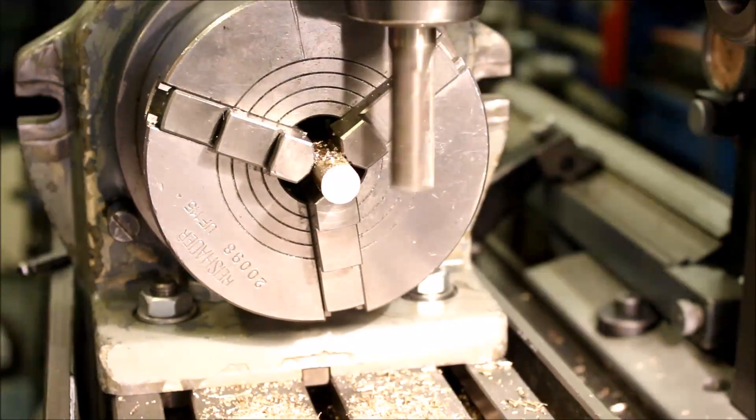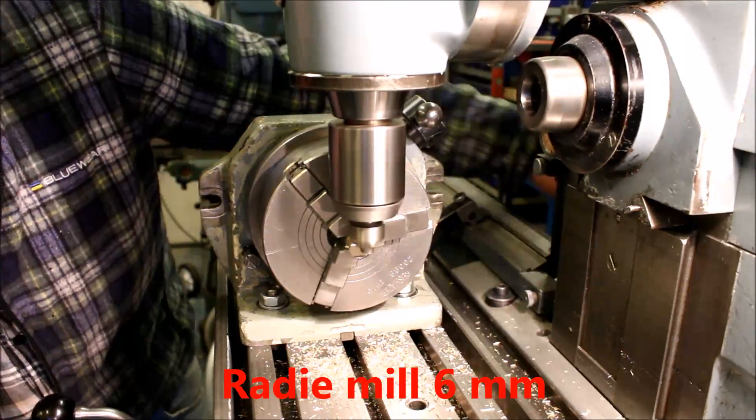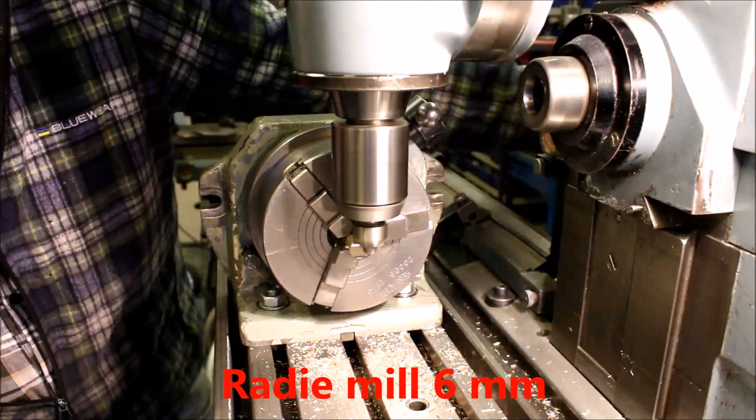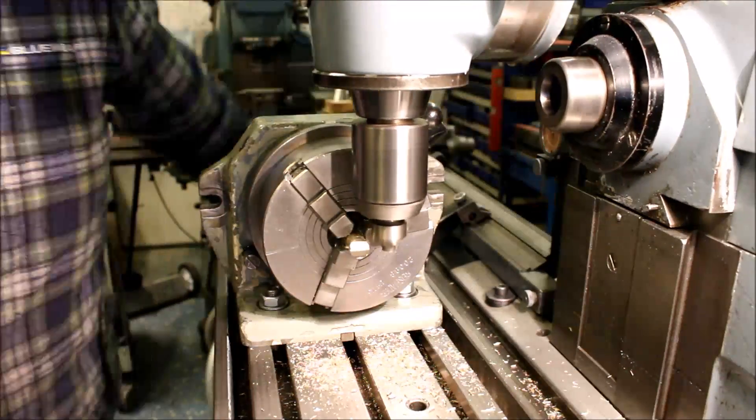Milling down the brass bar to correct size and then using a ready mill six millimeter to make it fit inside the sliding part of the head.